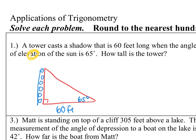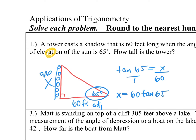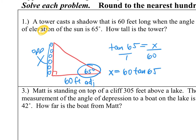In regards to 65, X is your opposite side and 60 is my adjacent. So I would say tangent 65 equals X over 60. Cross multiply: X equals 60 times the tangent of 65. In your calculators, rounded to the nearest foot, that's about 129 feet tall.